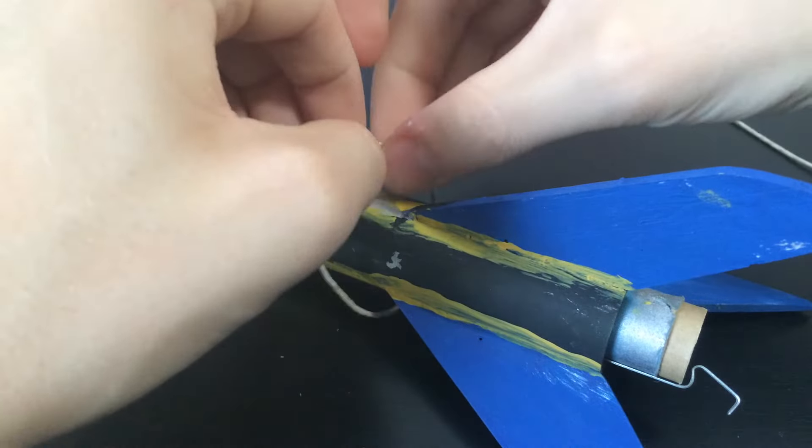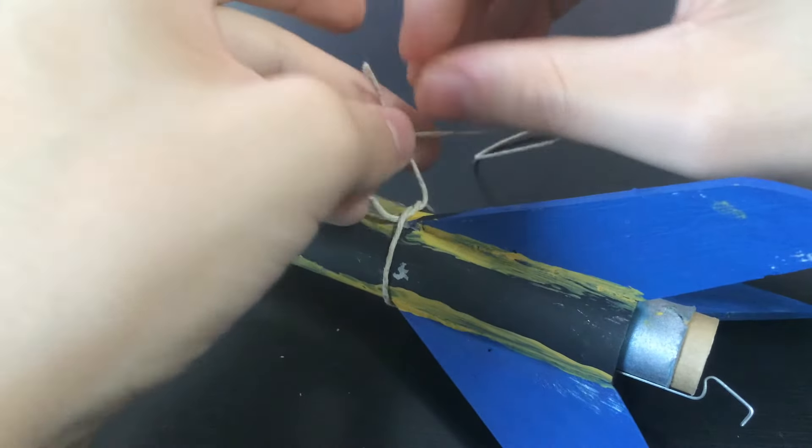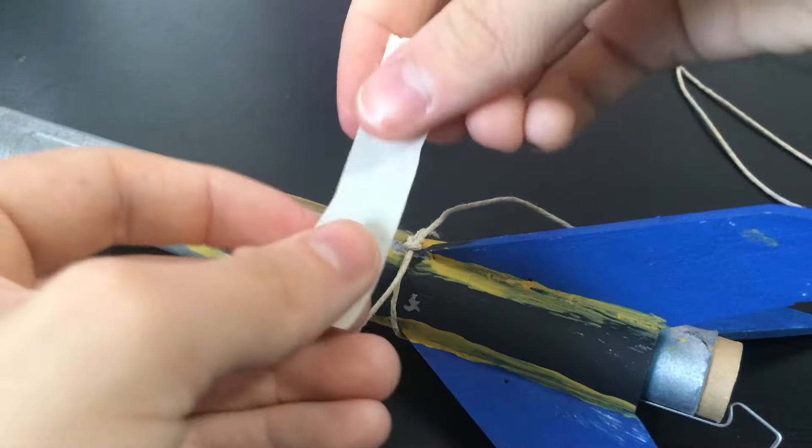Tie some string around the center of mass. A simple square knot should do the trick and most strings should work as your model rockets aren't particularly heavy. When you're done tying the knot, grab a piece of masking tape to secure it in place.